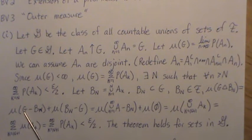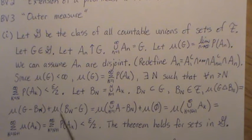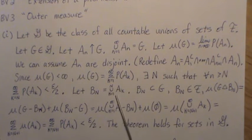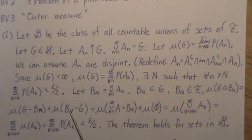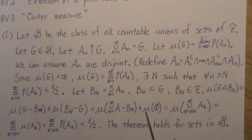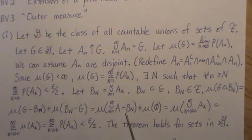Then the measure of the symmetric difference of G and B_N, which is the measure of G minus B_N plus the measure of B_N minus G. Well, this one here, G is that infinite union. So we can put that in for G. B_N was, of course, this union. B_N is a subset of G, so when you subtract that off, you get the empty set, and this is 0.